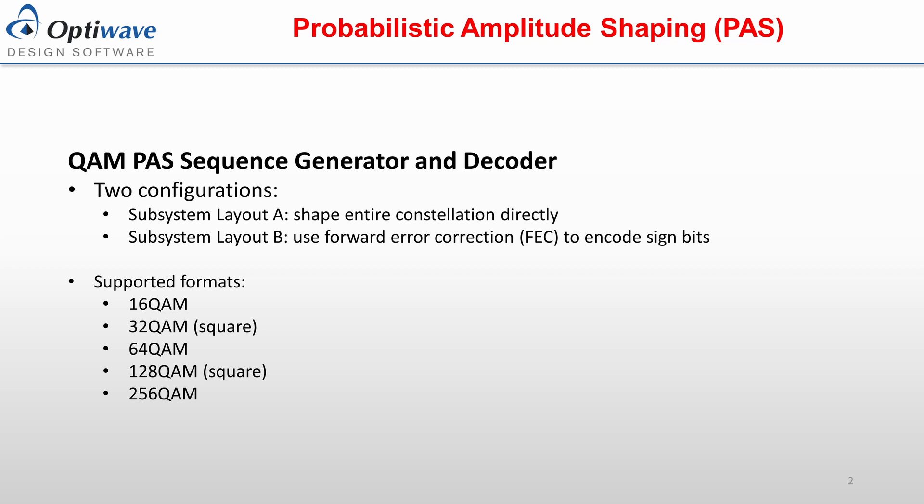The QAM pass sequence generator and decoder components have two available configurations: subsystem layout A, which shapes the entire constellation directly, and subsystem layout B, which applies shaping while using forward error correction to encode the sign bits. These components currently support the following five square formats: 16, 32, 64, 128, and 256 QAM.